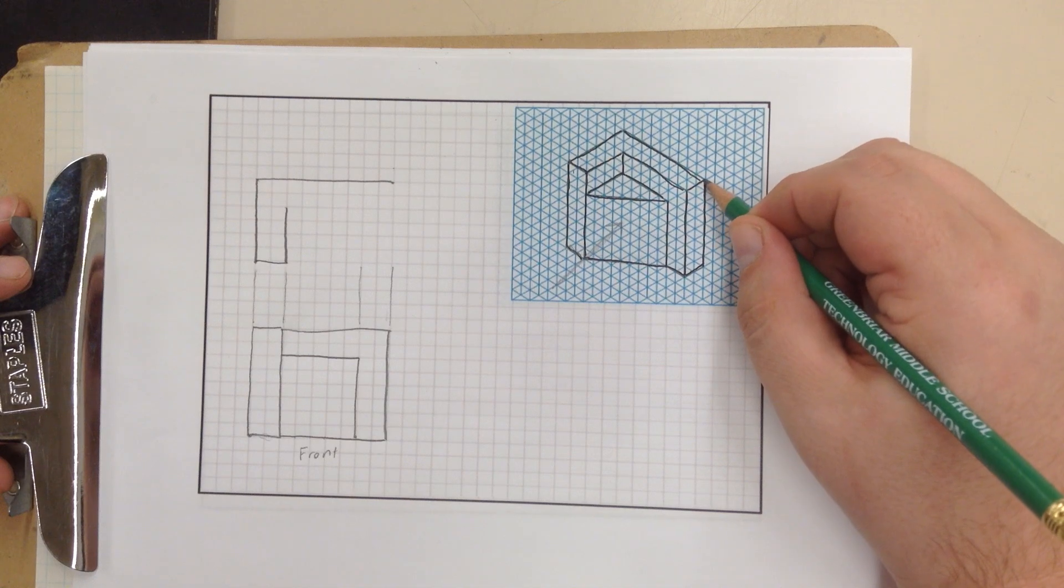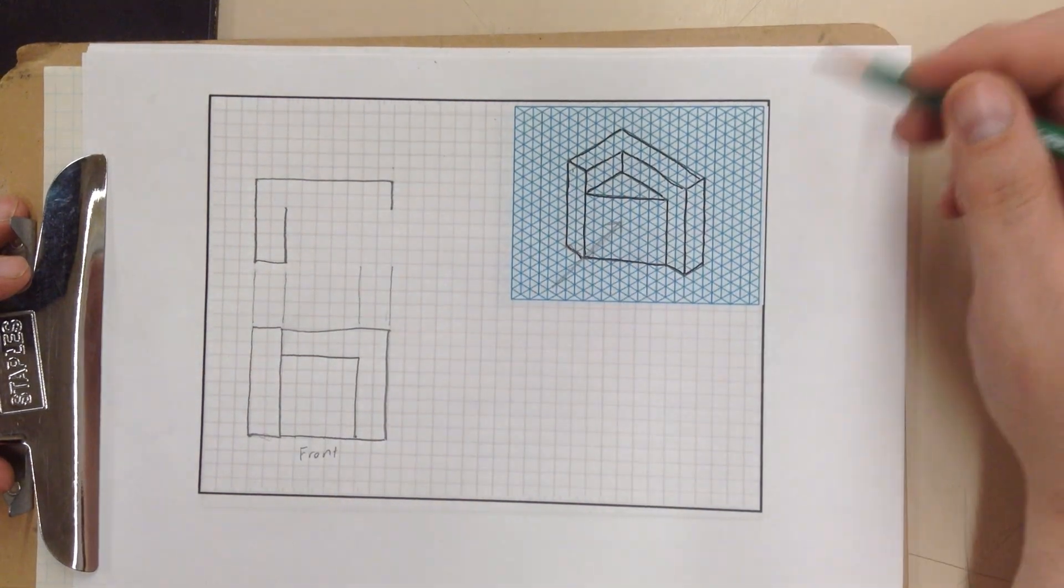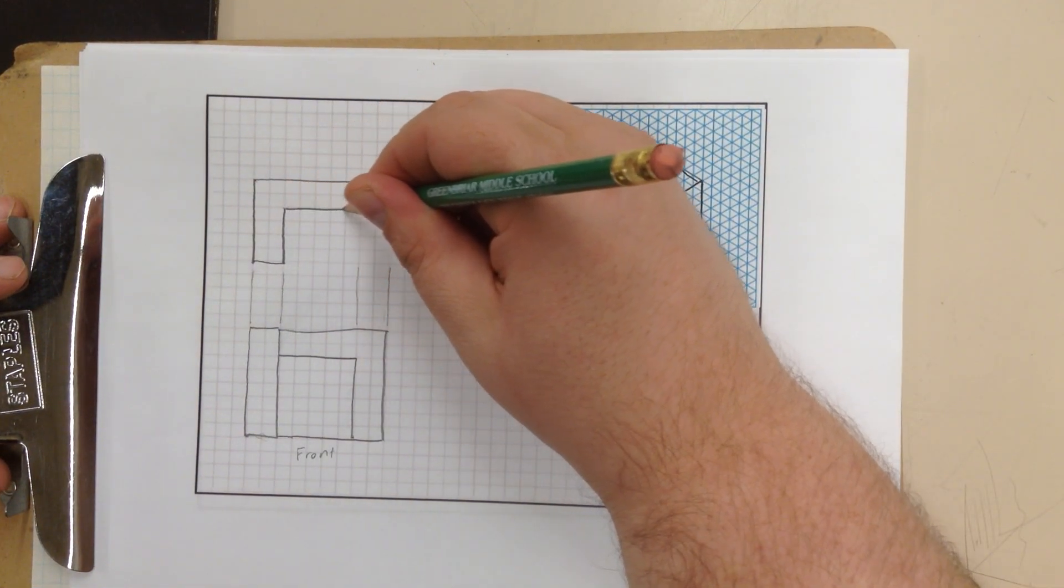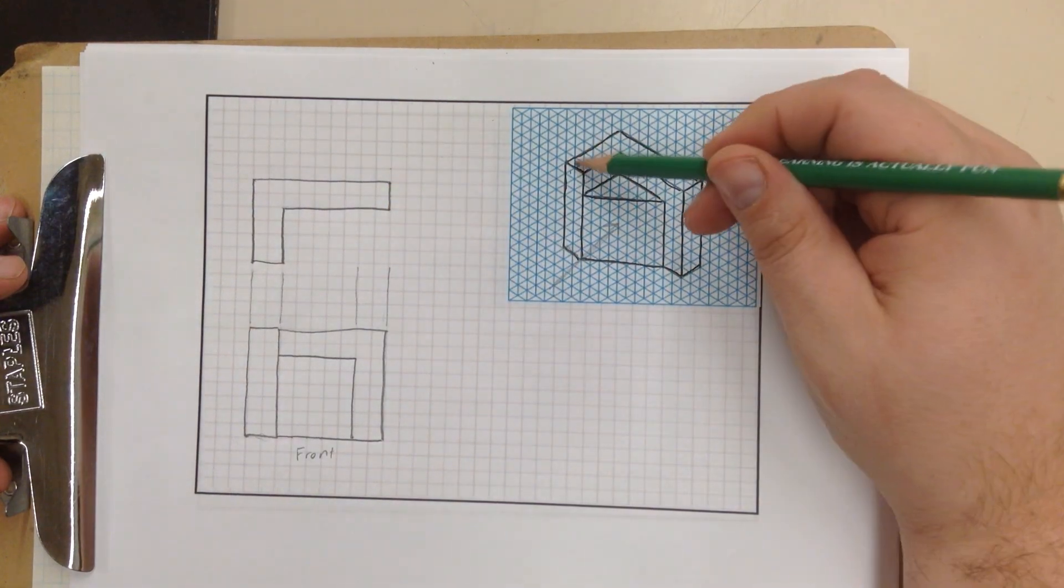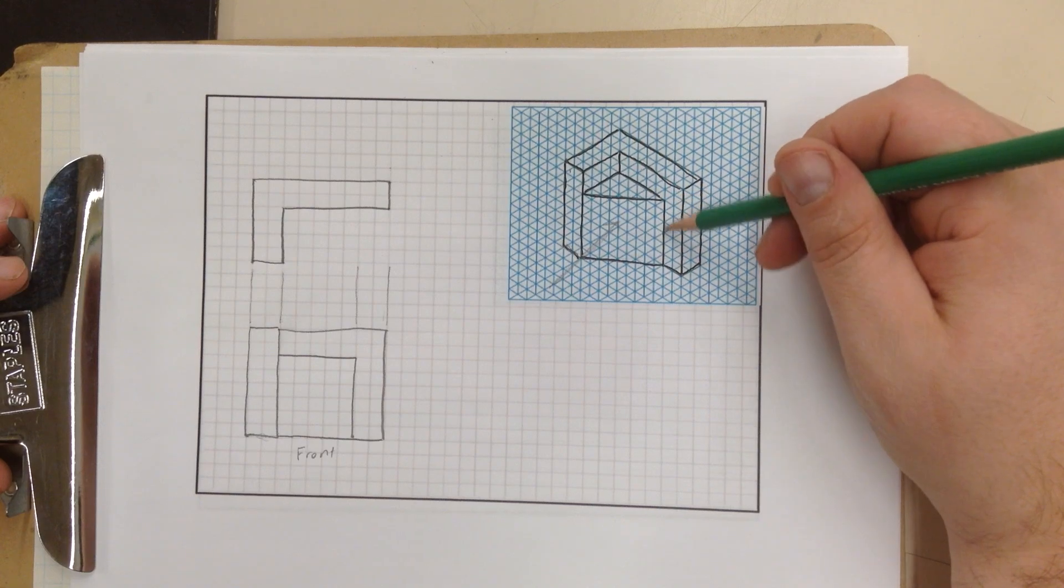If I look at this point, which is also this point, it's 2 wide. So right there. And this line connects, so I can close the shape. So I have my L laid out.